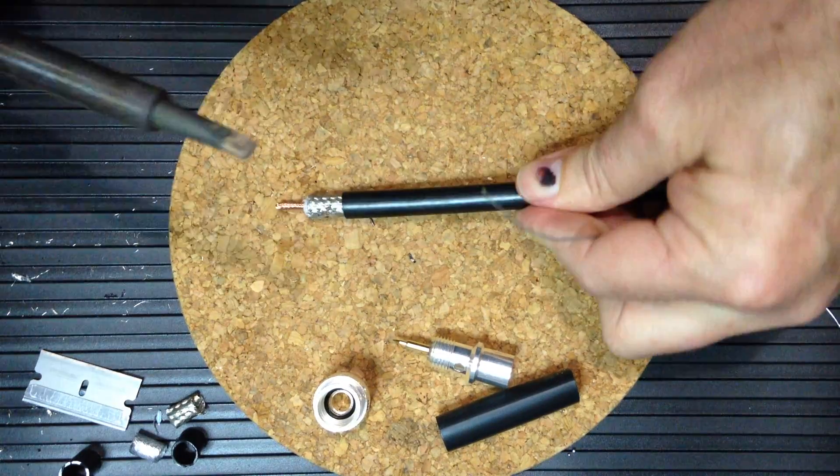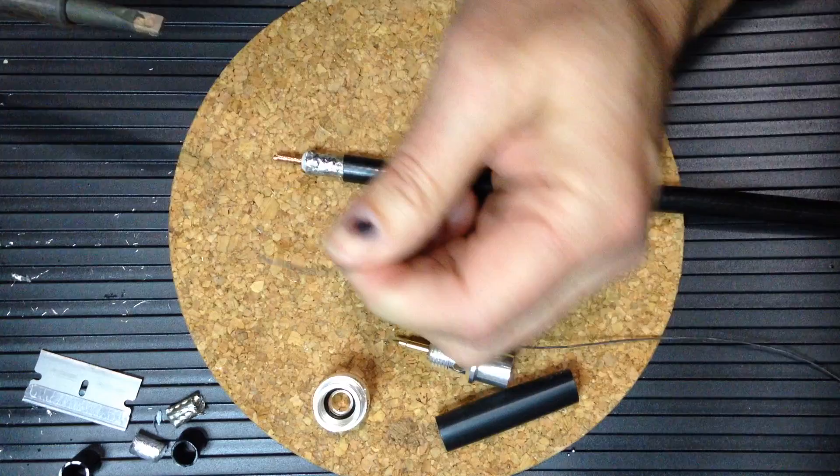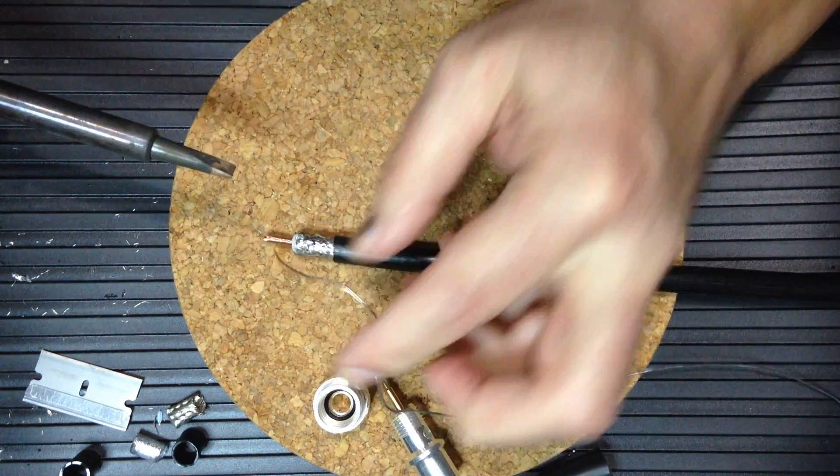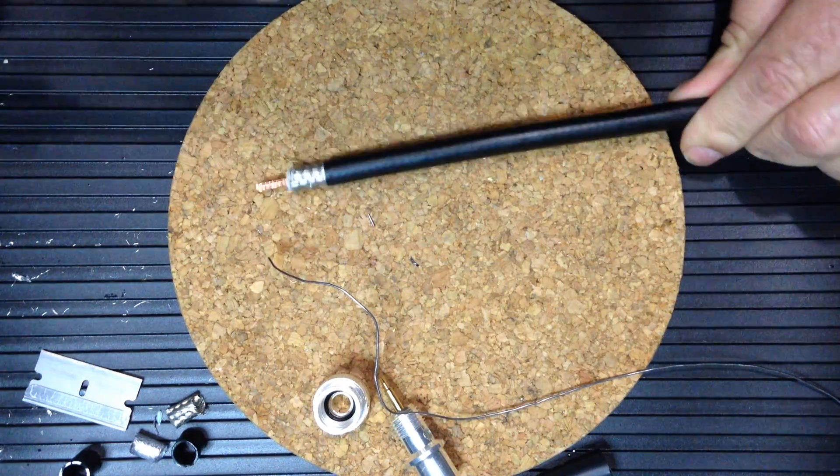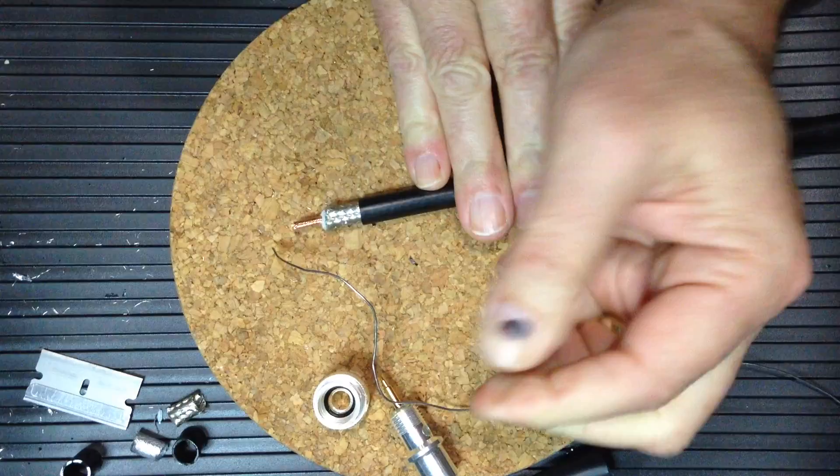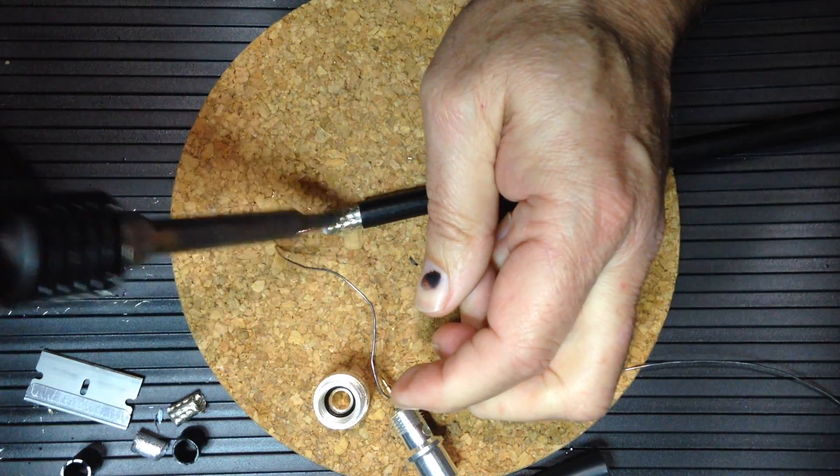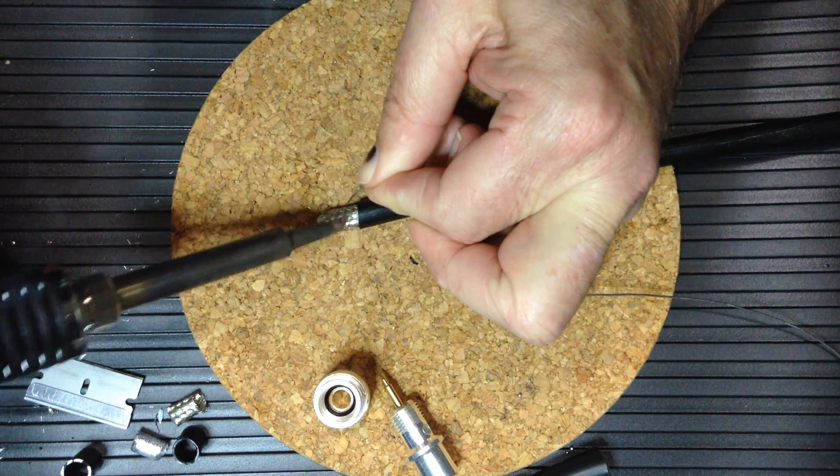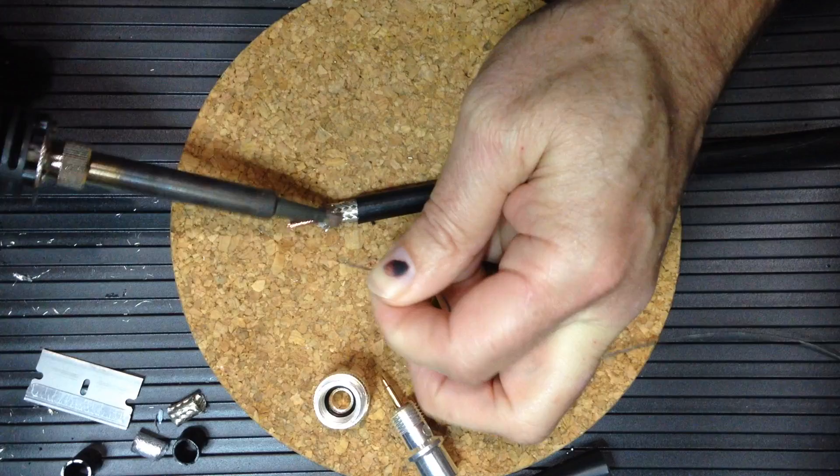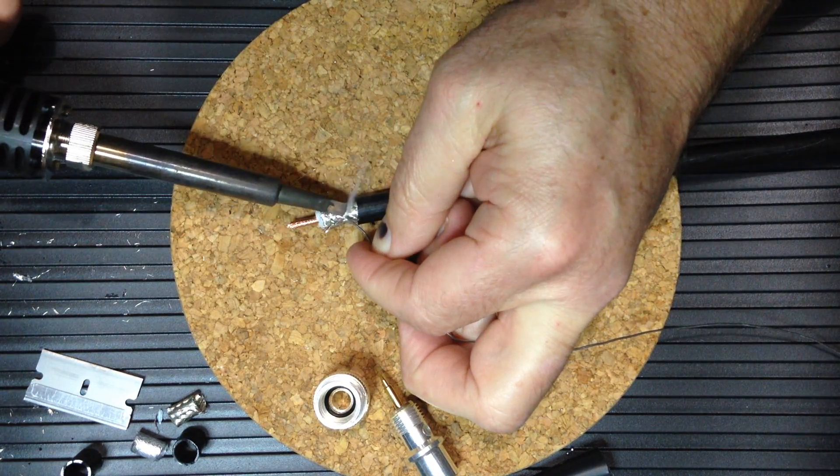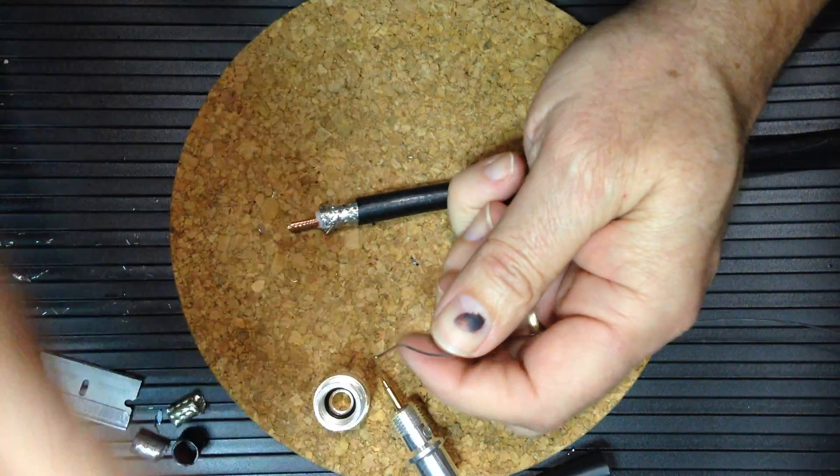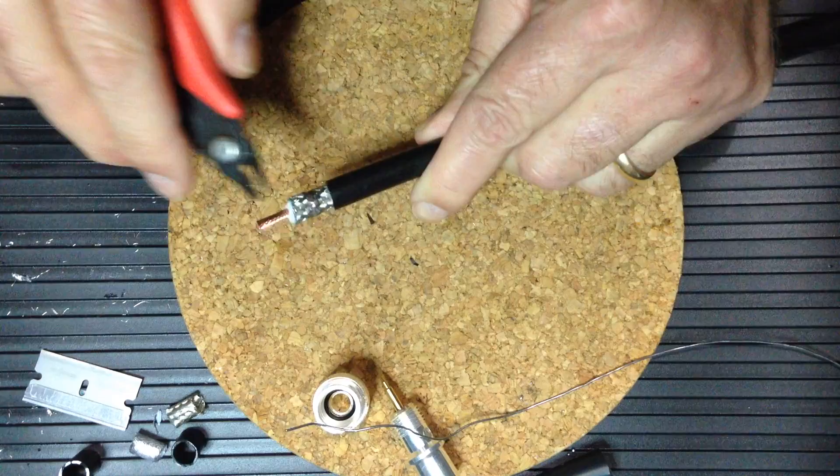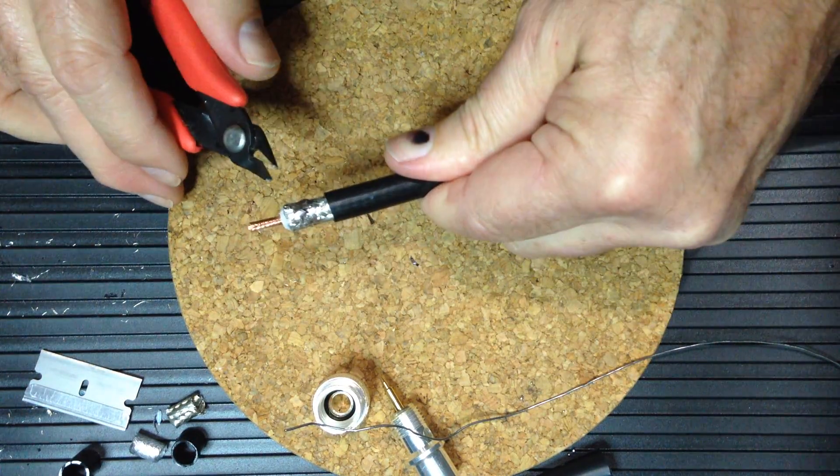You don't want to apply much solder at all, just enough to adhere to that shield braid all the way around. This step is recommended if you're going to be running much power through the connector, but it also can help the connector retain its structural strength throughout its lifetime.